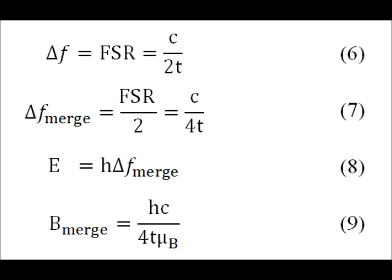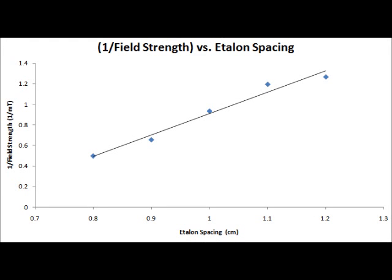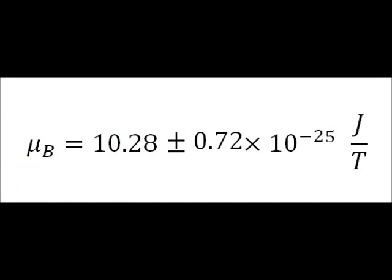The data analysis primarily consisted of plotting equation 9 and using a linear fit to determine the Bohr magneton from the slope. The Bohr magneton was determined to be 10.28 plus or minus 0.72 times 10 to the negative 25th joules per tesla. This falls within one and a half standard deviations of the accepted value.